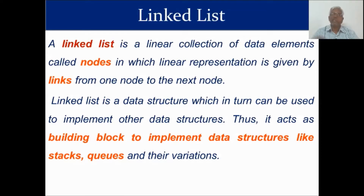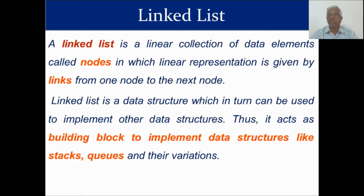In arrays, one node is connected to the next node automatically, because elements are consecutively stored in memory — so there is no need for any explicit connection. But in a linked list, each node must be connected through a pointer, which we call a link.